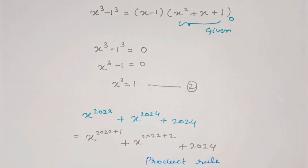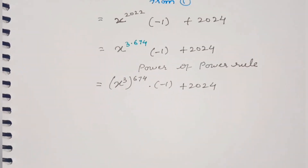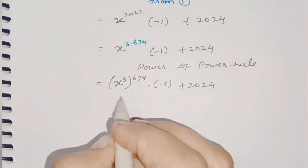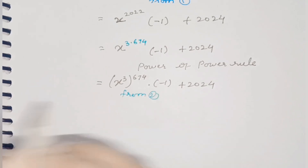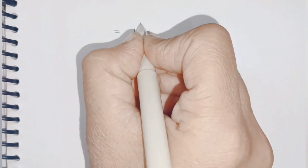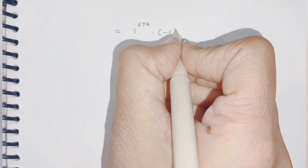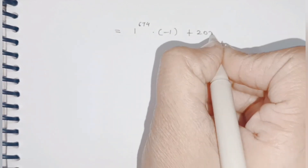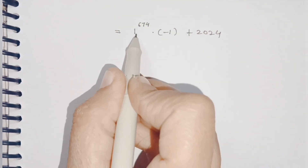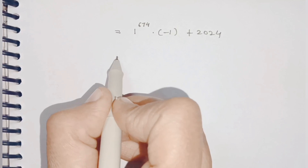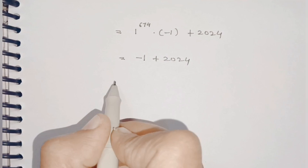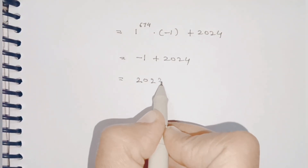From equation number 2 we know x cubed equals 1, so this term becomes 1 raised to 674, into minus 1, plus 2024. Since 1 raised to any number is 1, this gives 1 times minus 1, which is minus 1. So minus 1 plus 2024 equals 2023.